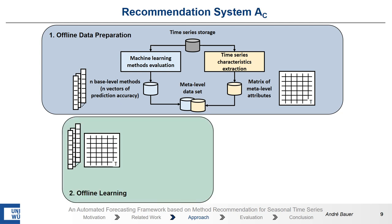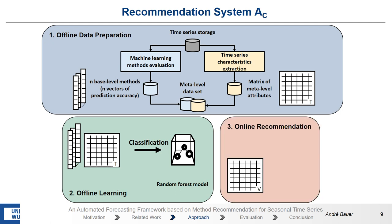The first recommendation system is a classification task. It takes as input the accuracy of the machine-learning methods and the time-series characteristics, and then in a multi-class classification, it trains a random forest model that predicts for given time-series characteristics the best methods. In the online phase, when new time-series are given, characteristics are calculated, fed into the random forest model, and it returns for each time-series the best method.